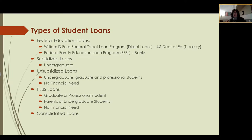If you log into your student loan website, you should be able to see whether the loans you have are direct or FFEL. Within the direct loan program there are two different kinds: subsidized loans and unsubsidized loans. With subsidized loans, you are eligible for the government to pay your interest while you're in college, so your interest does not build on top of your student loans while you're in school. These are for undergraduates and are income-based eligibility.